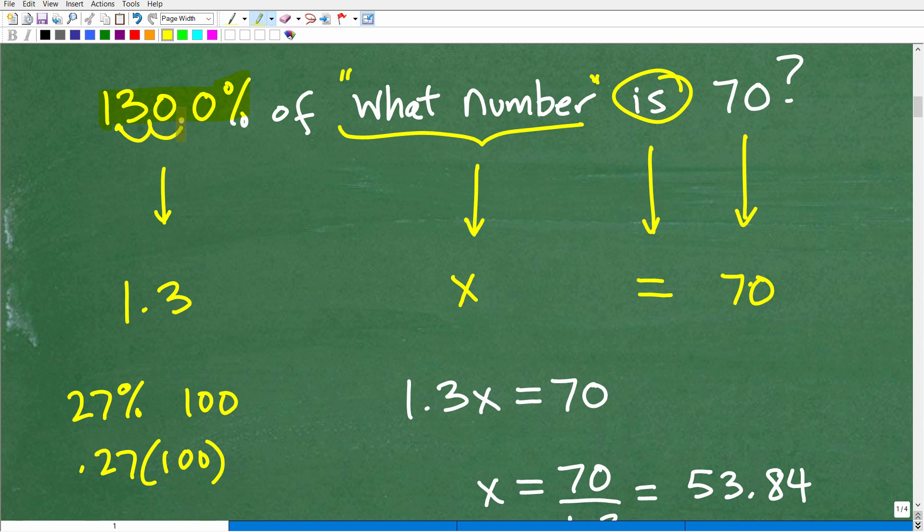So here, if I'm trying to find 130% of what number, well, I'm going to convert this to a decimal, 1.3, and I'm going to multiply by that number. That's how I find the percent of that number. So in algebra, we're going to have 1.3 times x. 1.3x is or is equal to 70.